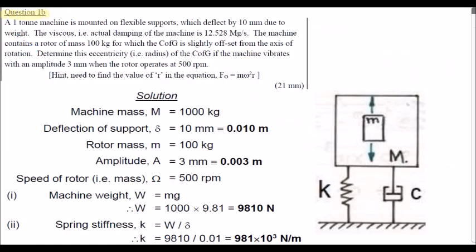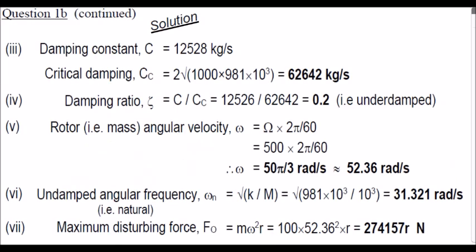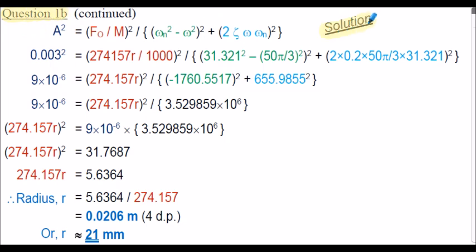So question 1b, commencement of the solution. I'll let you review this solution at your own pace — it's very similar to example 1b. As always, just extract the information carefully from the question. In this particular question, we will need to calculate the damping ratio zeta from the information given in the question. But again, I'll let you follow the rest of the solution. The offset radius is approximately equal to 21 millimetres.